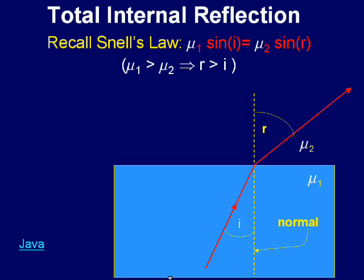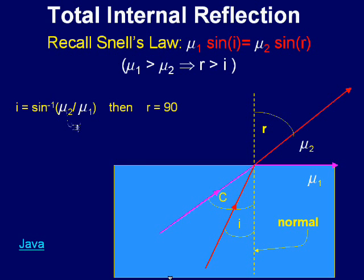Since μ₁ is greater than μ₂, r is greater than i. Let us now increase i. At one particular value of i, r becomes 90 degrees. This value of i is called the critical angle.